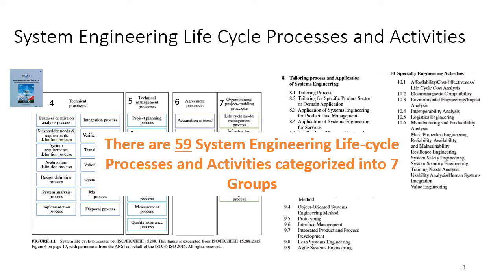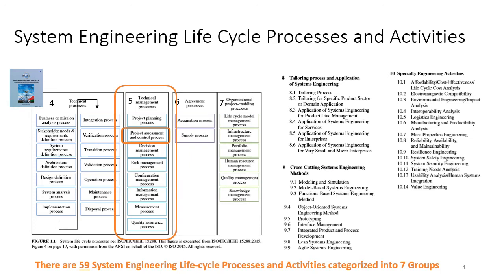The process is so complex that there are 59 system engineering life cycle process activities, and those 59 activities are organized into seven groups. The topic of this video falls under the technical management processes and is related to the project assessment and control process.